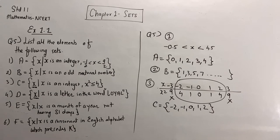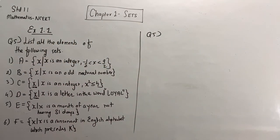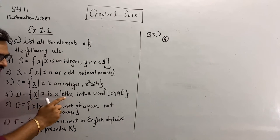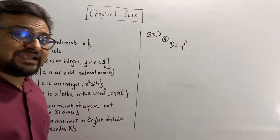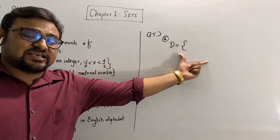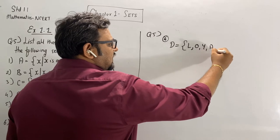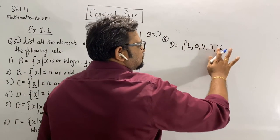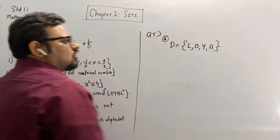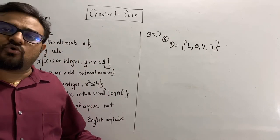Fourth part of question 5: D = {x such that x is a letter in the word 'loyal'}. Elements are represented in brackets separated by commas. The word is L, O, Y, A, L — but we have already written L, so no need to repeat. The answer is {L, O, Y, A}. You can write it in any order, such as {A, Y, O, L}.